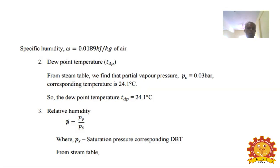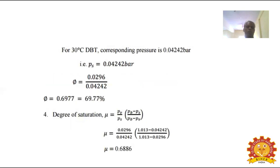Third question is relative humidity, the ratio P_V by P_S. P_S is the saturation pressure corresponding to dry bulb temperature. From steam table for 30 degrees centigrade, P_S equals 0.04242 bar. Substituting, relative humidity equals 0.0296 divided by 0.04242, giving 69.77%. Fourth question is degree of saturation. Using the relation mu equals (P_V / P_S) times (P_B minus P_S) divided by (P_B minus P_V), substituting all values, degree of saturation mu equals 0.6886.